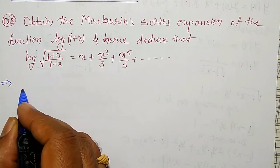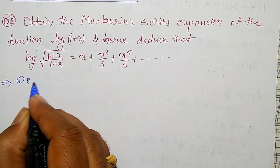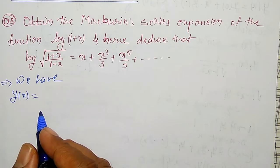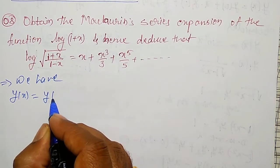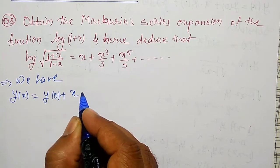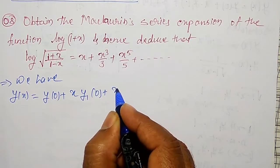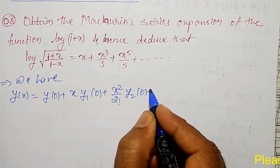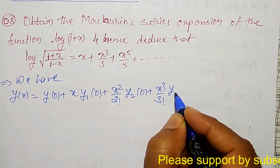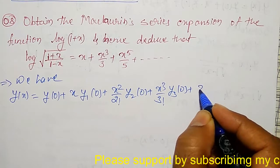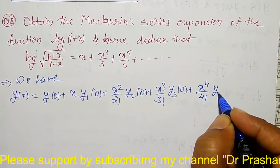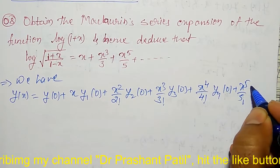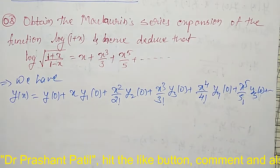Let me consider the Maclaurin series first. We have y(x) = y(0) + x·y₁(0) + x²/2! · y₂(0) + x³/3! · y₃(0) + x⁴/4! · y₄(0) + x⁵/5! · y₅(0) + so on.